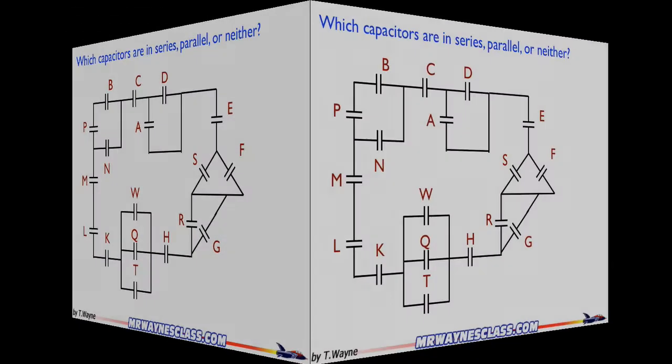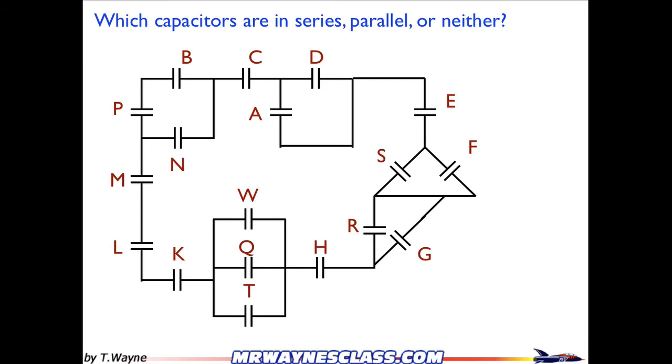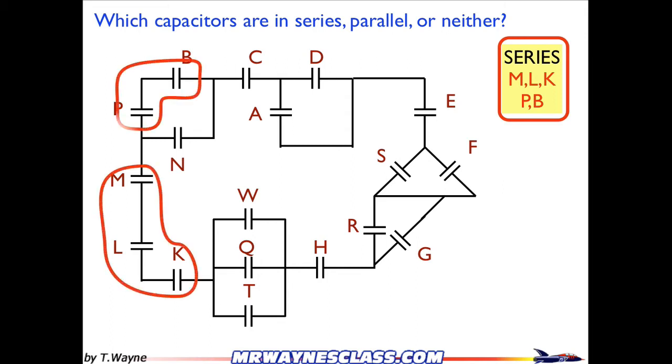So let's take a look at what are in series and what's in parallel. First, let's look at what's in series. So the ones that are in series are the combination of MLK and PB. So here's MLK, those are in series, and PB, those are in series.